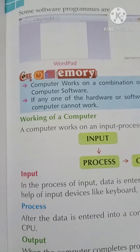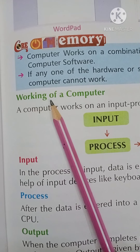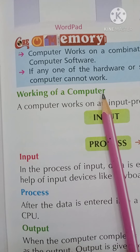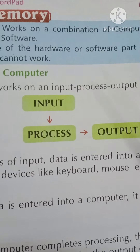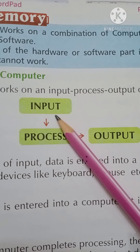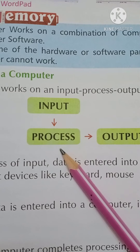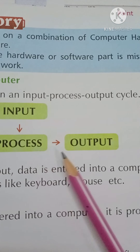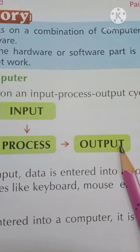Next is the working of our computer — how the computer does its work. First of all, we have input: we feed data. Then we process it. Then we have output, which means results.